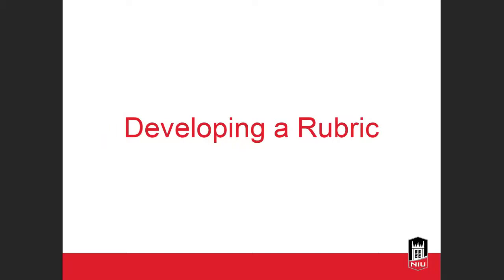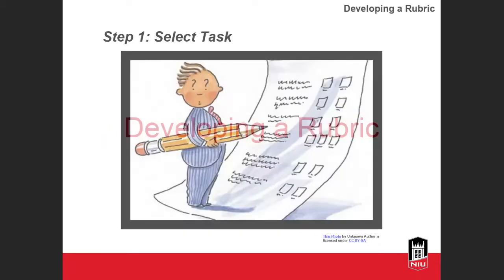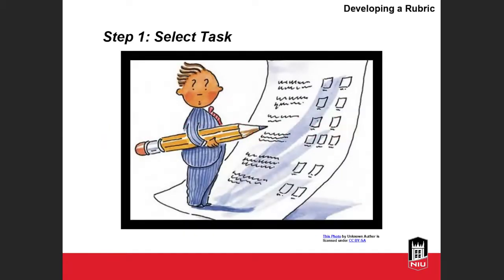Now let's discuss developing a rubric. The first step is to select the task — select an authentic task to assess. You want to identify ways that students can demonstrate that they meet goals and objectives. Avoid inessential expectations. Replicate meaningful tasks found in the real world and encourage students to problem solve and apply their knowledge. Make sure your rubric relates to the outcomes being measured — it should match the learning goals and objectives for that assessment and address all aspects without anything extraneous.